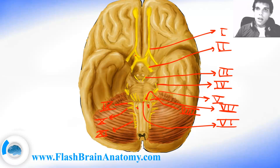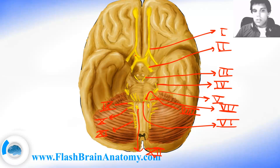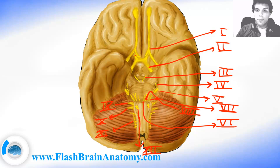The last nerve is the hypoglossal nerve, right here between the olivary bodies and the pyramids — nerve number 12. It is mainly motor and provides innervation for the tongue muscles, except the palatoglossus which is innervated by the vagus.